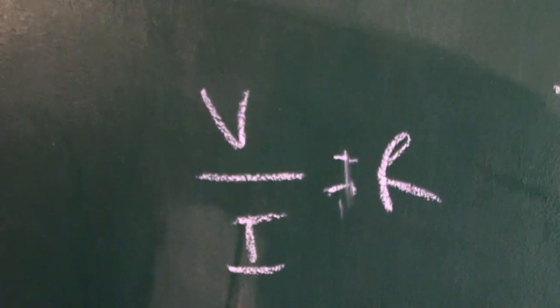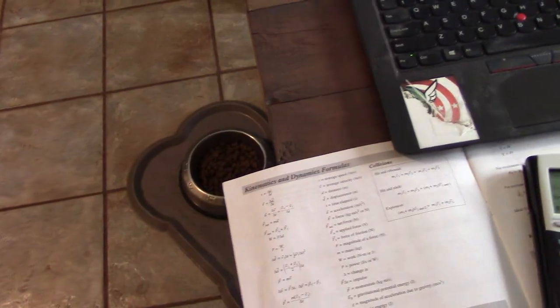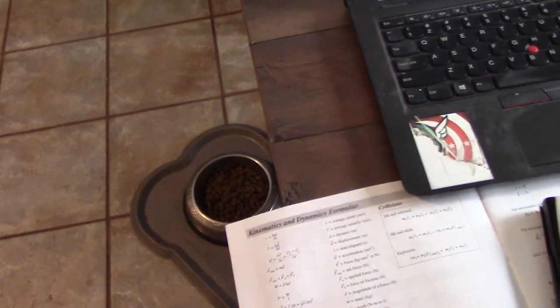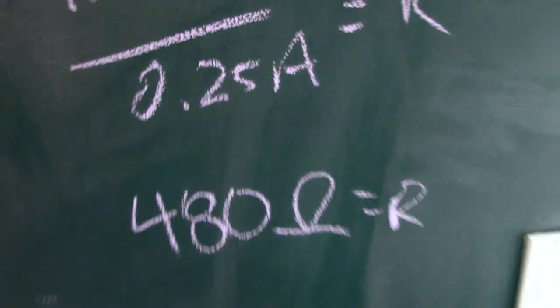Solving for resistance: R equals V over I, so 120 volts divided by 0.25 amps equals 480 ohms resistance.